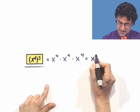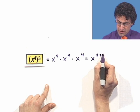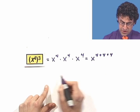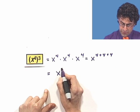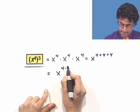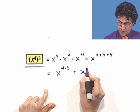And so I see x raised to the four plus four plus four, which you'll notice is x to the, well, four times three, which equals x to the twelfth.